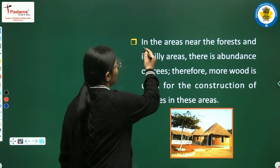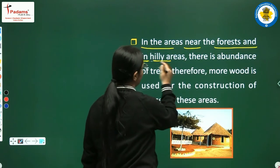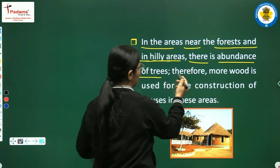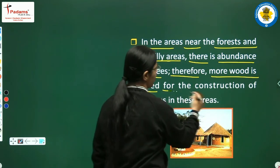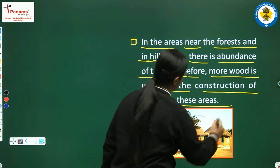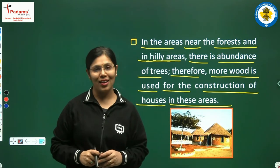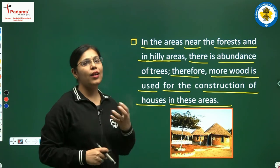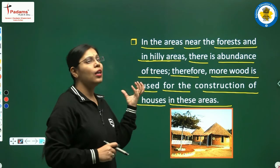In areas near the forest and in hilly areas, there is an abundance of trees. Therefore, more wood is used for the construction of houses in these areas. Baccho, jahan jungle ya pahad hote hain, kyunki wahan bahut saare ped hote hain, isliye un kshetron mein lakdi ka upyog ghar banane mein zyada hota hai.